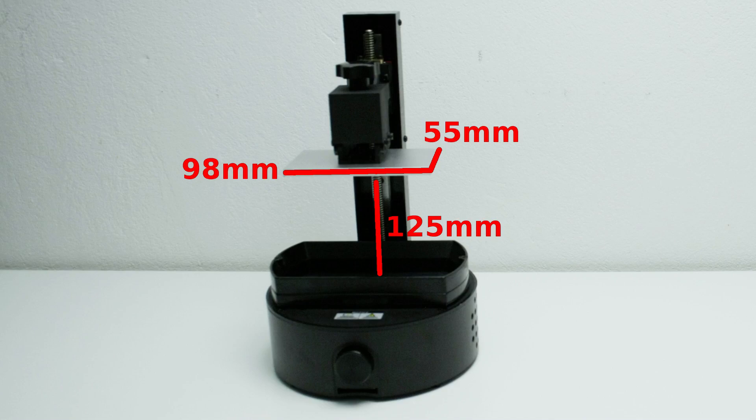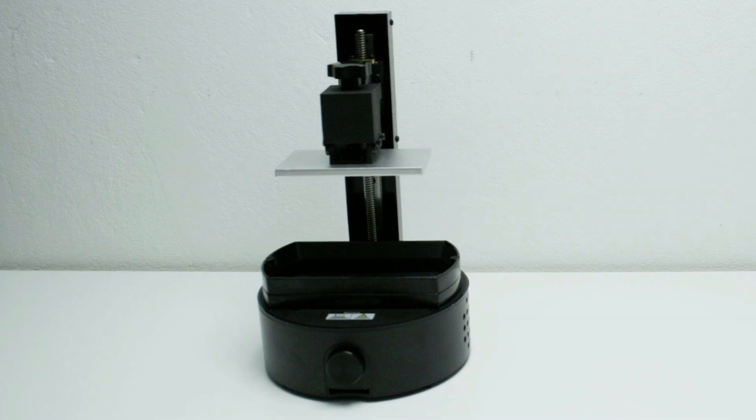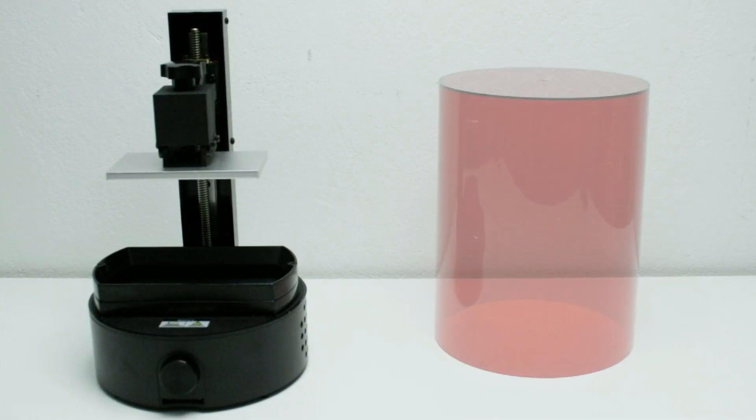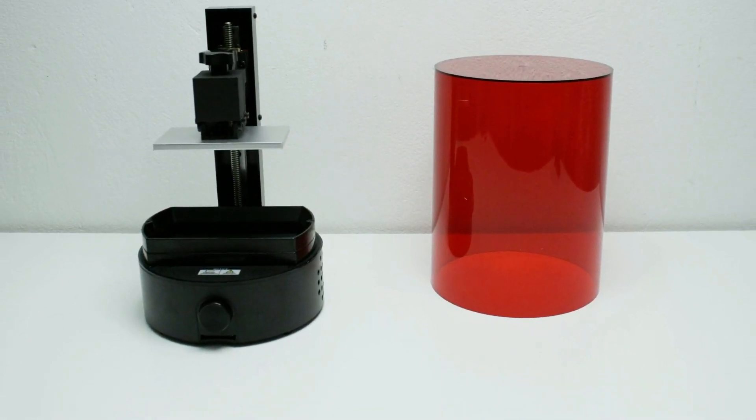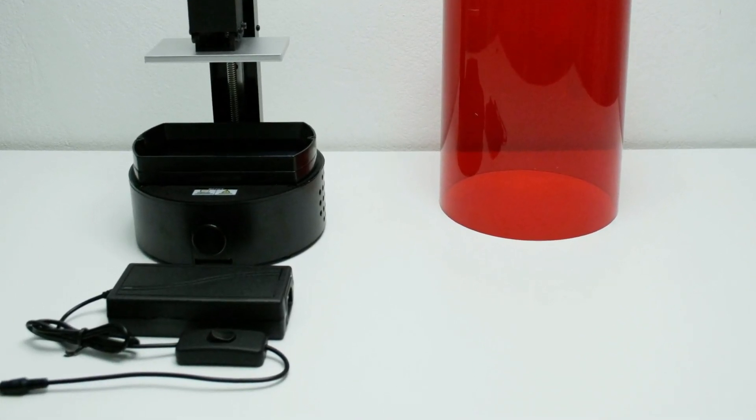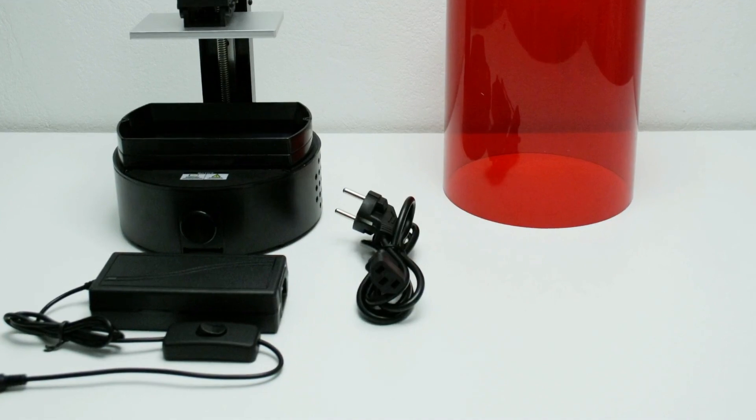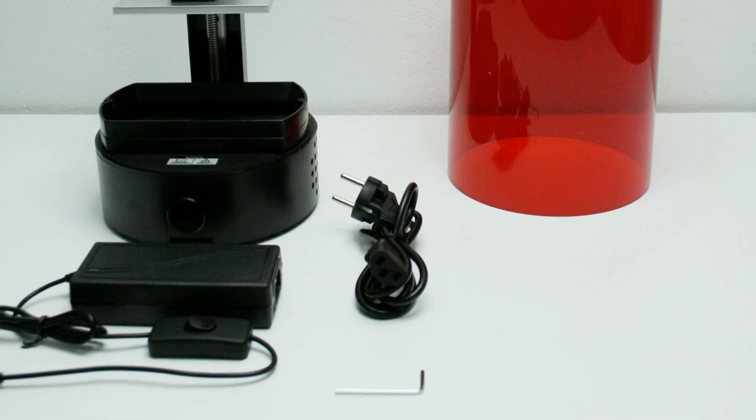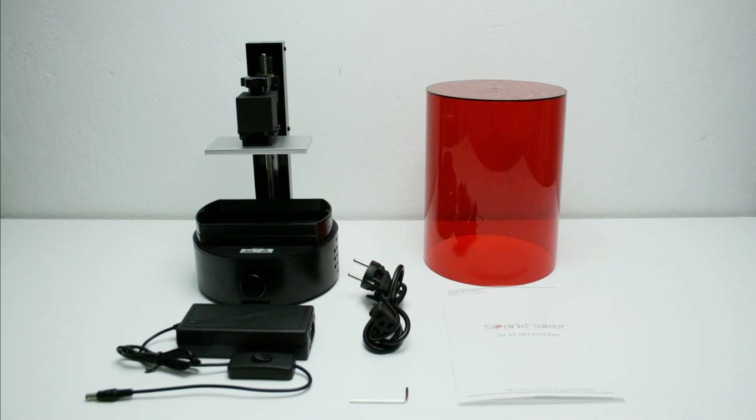The package contains the resin printer itself, a UV blocking cover, the 24V power brick with a switch, a matching power cable for your region, a hex tool for maintenance and a short instruction manual.